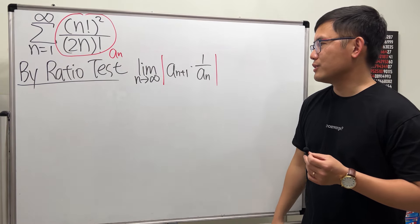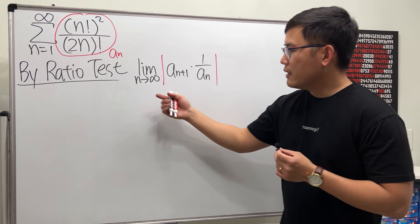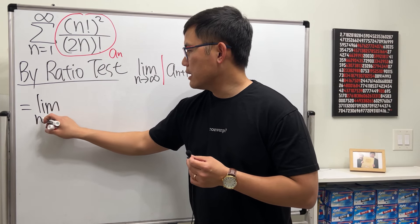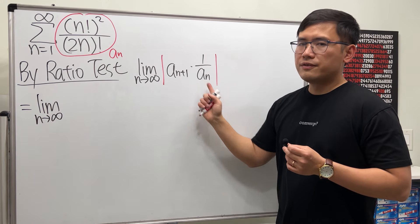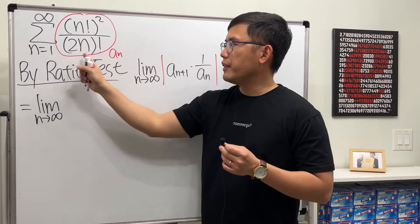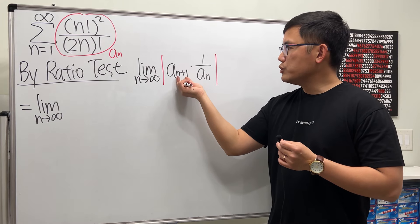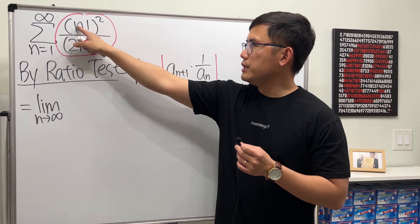But anyway, let's go ahead and just work this out. So here we have the limit as n goes to infinity. We really don't need the absolute value in this case because everything is positive here.